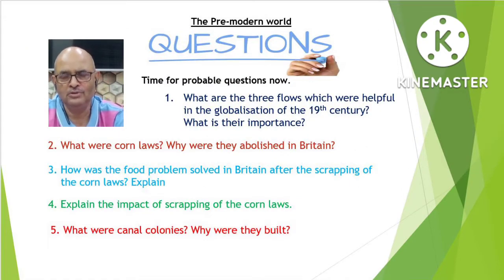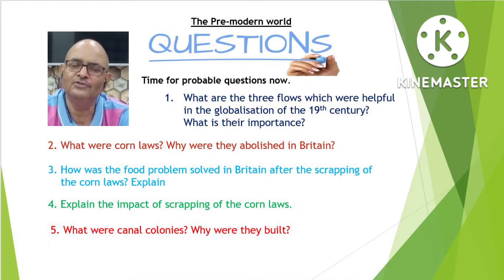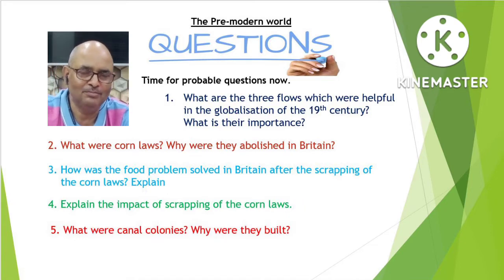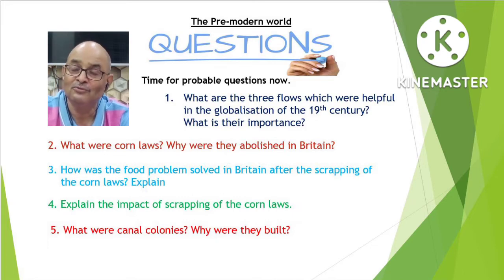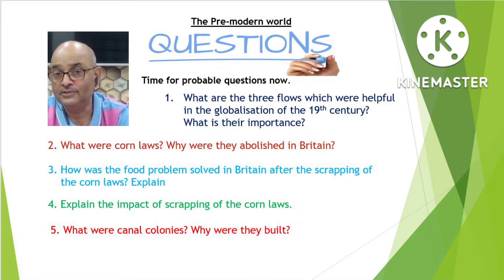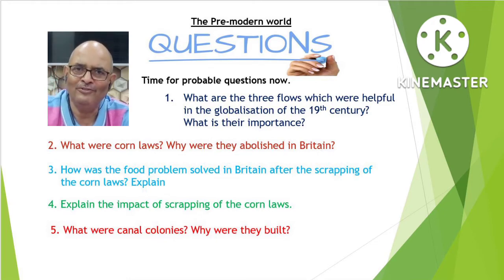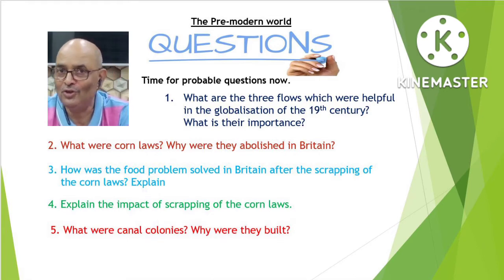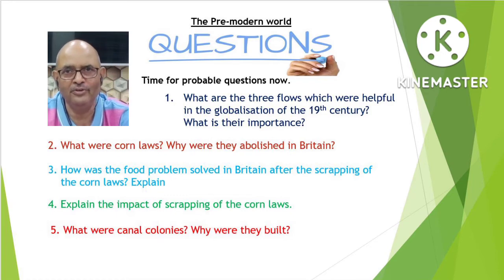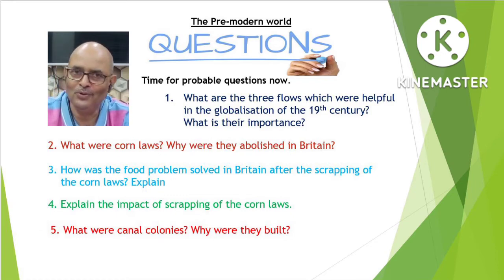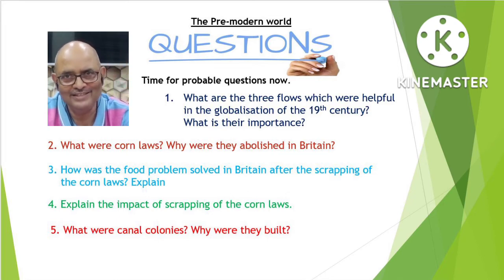Now, time for probable questions: one — What are the three flows which were helpful in the globalization of the 19th century? Two — What are Corn Laws? Why were they abolished in Britain? Three — How was the food problem solved in Britain after the scrapping of the Corn Laws? Four — Explain the impact of scrapping of the Corn Laws. Five — What were canal colonies? Why were they built? Read your books and prepare answers. In the next class we will discuss the role of technology. Till then, keep reading and have a nice day. Thank you.